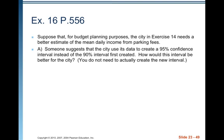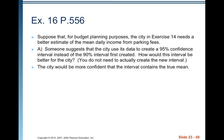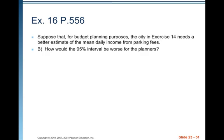For budget planning purposes, someone suggests using a 95% confidence interval instead of the 90% interval. How would this be better? The city would be more confident that the interval contains the true mean — 95% confidence instead of 90%. But how would it be worse? Whenever you go up in confidence, you go down in precision. The interval will be wider and less precise, giving more possible values and making it harder to plan.